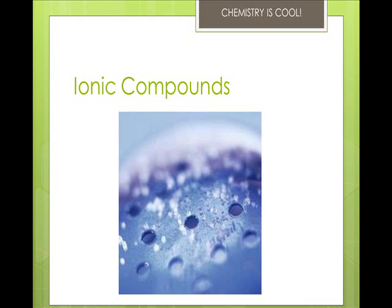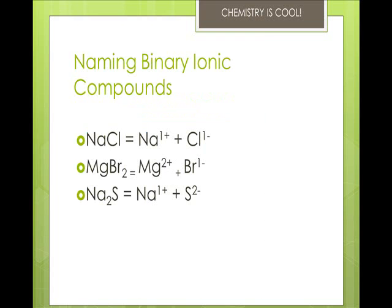We're going to change gears to ionic compounds. When we name binary ionic compounds, that means they're made of two elements. Ionic compounds are made of a cation bonded to an anion, and the name is just made up of the names of the ions — you say the cation first and the anion second. This is easy with Group A elements: sodium chloride, magnesium bromide, and sodium sulfide.